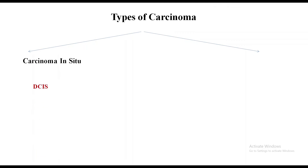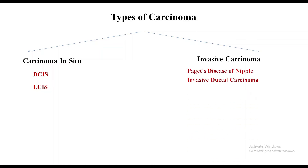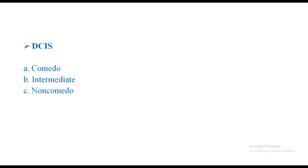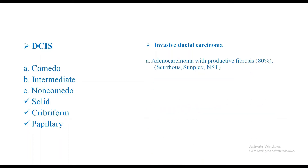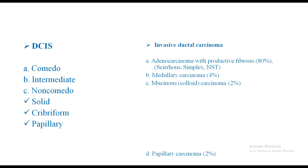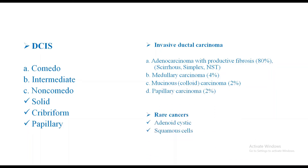The types of carcinoma you must be aware of: carcinoma in situ — examples are ductal carcinoma in situ (DCIS) and lobular carcinoma in situ (LCIS). Invasive carcinoma includes Paget's disease of the nipple, invasive ductal carcinoma, invasive lobular carcinoma, and rare cancers. DCIS types include comedocarcinoma, intermediate type, and non-comedocarcinoma (solid, cribriform, papillary). Invasive ductal carcinoma examples: adenocarcinoma with productive fibrosis, medullary carcinoma, mucinous or colloid carcinoma, papillary carcinoma. Rare cancers include adenoid cystic and squamous cell carcinoma.